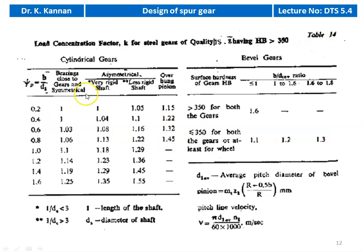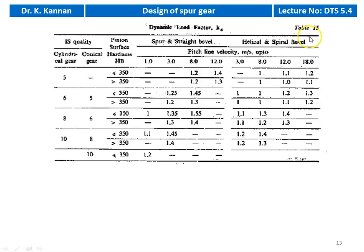Table number 14 gives the load concentration factor K for cylindrical gears, depending on the ratio ψ = B/D1, where B is face width and D1 is the diameter of the pinion. Initially take K·KD = 1.3. Table number 15 gives the dynamic load factor KD, which depends on the highest quality of the gear and pinion surface hardness HP in terms of Brinell hardness number.